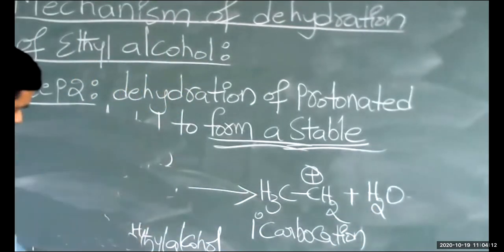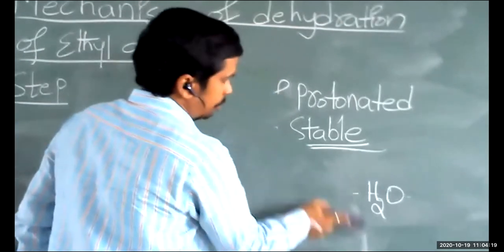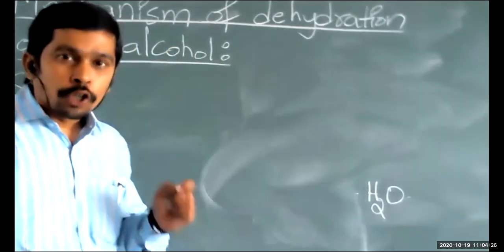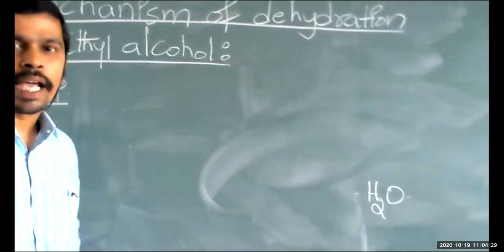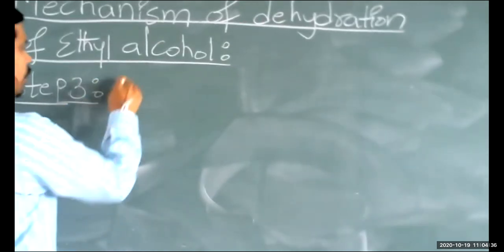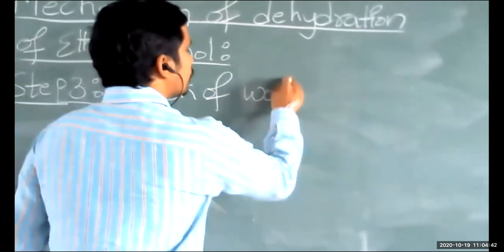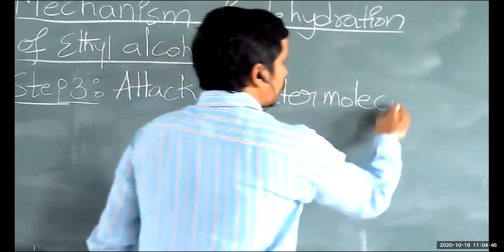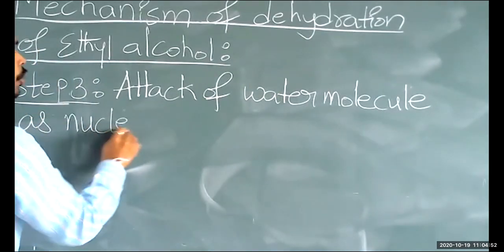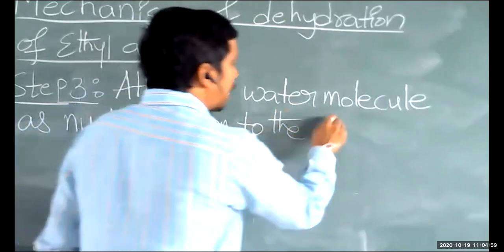Now step three. In step three: attack of water molecule. The water molecule formed in step two is acting as a nucleophile, and that water molecule is going to attack the stable carbocation. Step three is the attack of the water molecule as a nucleophile onto the stable carbocation.